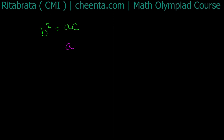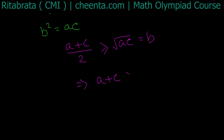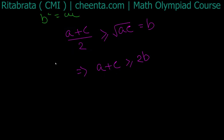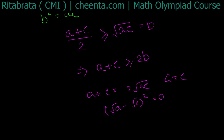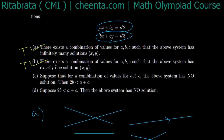Applying AM-GM: a plus c is greater than or equal to 2 times root(ac) equals 2b. Equality holds when a plus c equals 2 times root(ac), i.e., when (root a minus root c) squared equals 0, meaning a equals c. But since a, b, c are distinct, equality cannot hold, so we have the strict inequality a plus c greater than 2b. Thus 2b less than a plus c is indeed true.